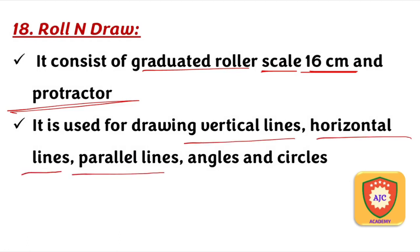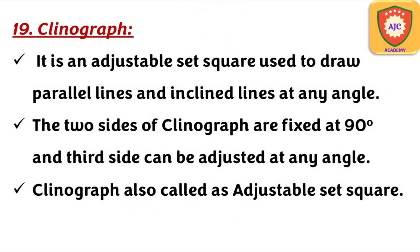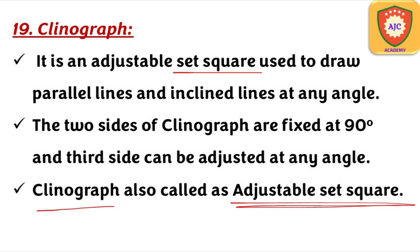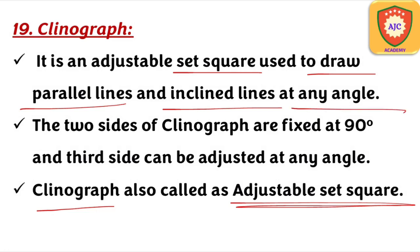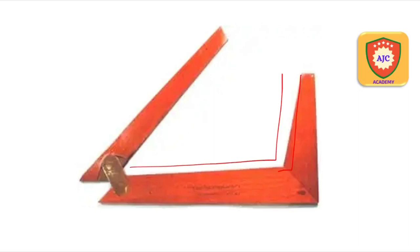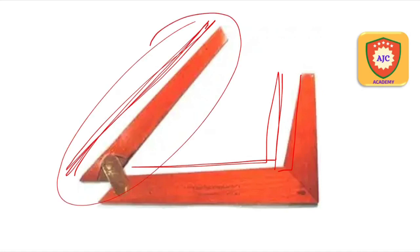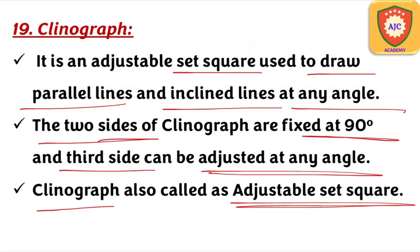This is the clinograph, also known as the adjustable set square. It can be used to draw parallel lines, inclined lines, and lines at any angle. The clinograph is fixed at 90 degrees but has an adjustable angle feature.